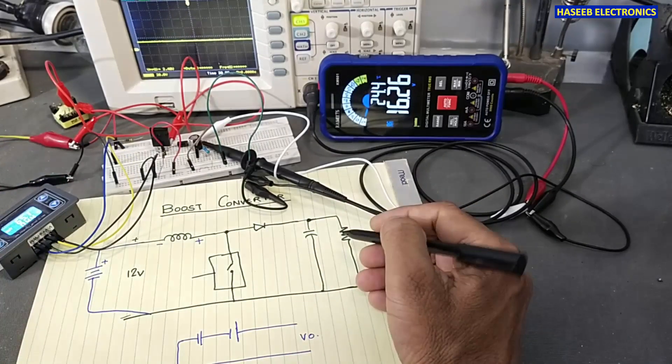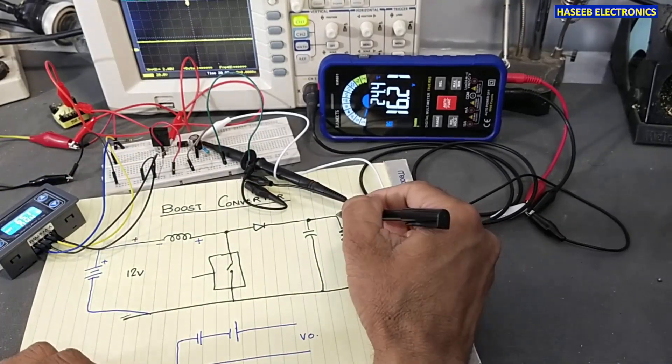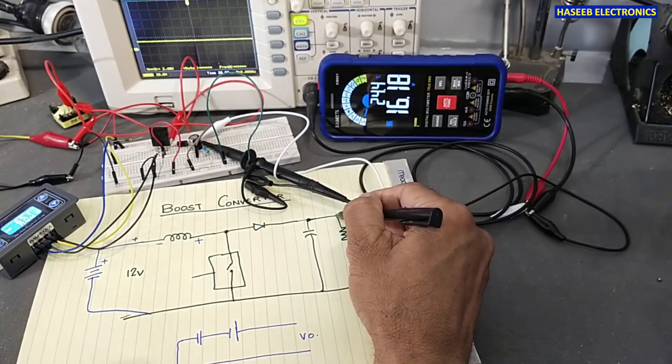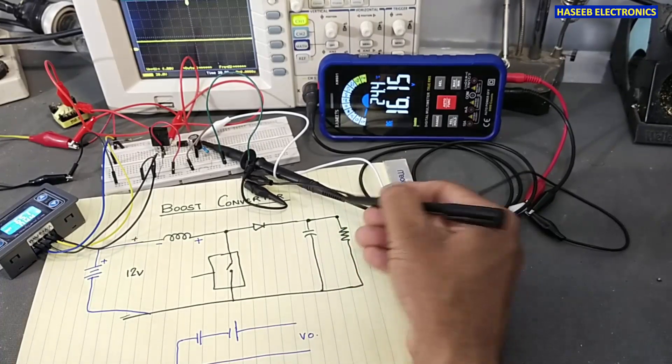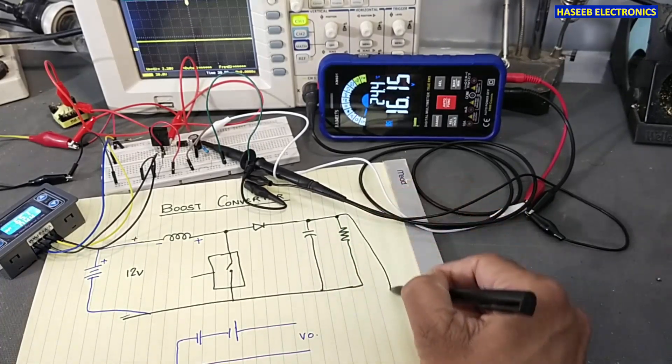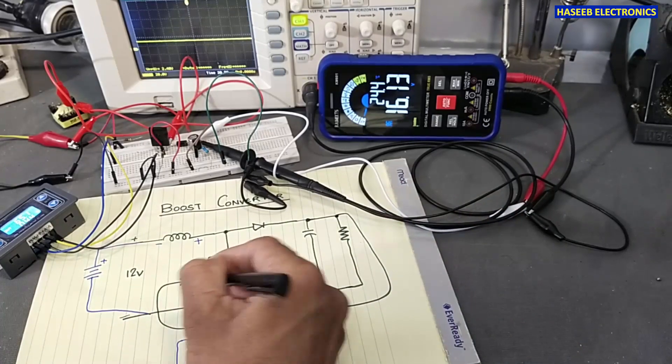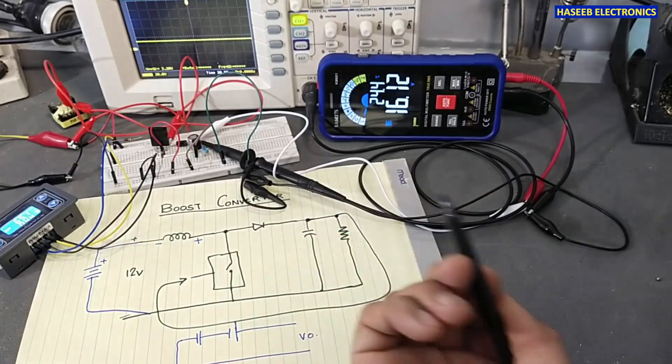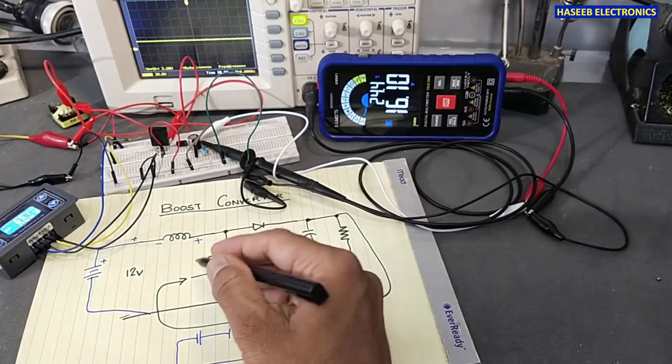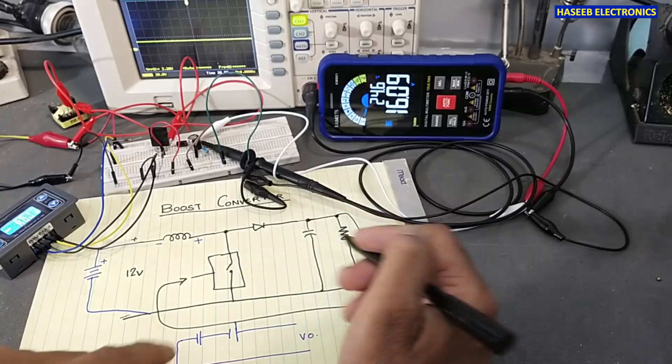If we have a working feedback system that will sense voltage from this point and we apply this feedback loop here to this PWM controller, so it will control the duty cycle to adjust the voltage here.